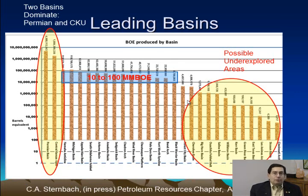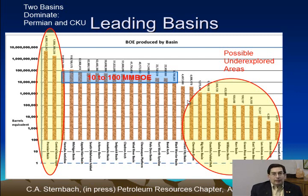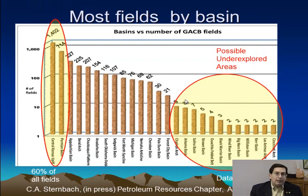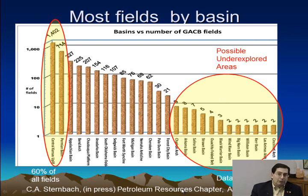Looking at the 30 basins that produce from the Cambrian-Ordovician or Great American Carbonate Bank reservoirs, it's clear that two basins dominate on the far left: the Permian Basin and the Central Kansas Uplift. The Permian Basin has 5 billion barrels equivalent production and the Central Kansas Uplift has 2 billion barrels, so these are clearly the dominant players. There are about a dozen fields with 10 to 100 million barrels of production, and on the far right a handful of fields with lesser amounts — which, if you're an optimist as I am, are potentially underexplored areas.